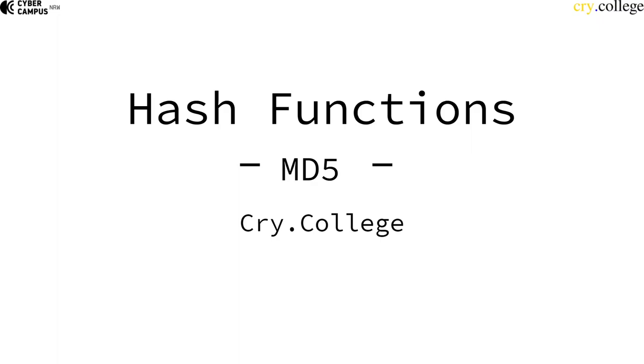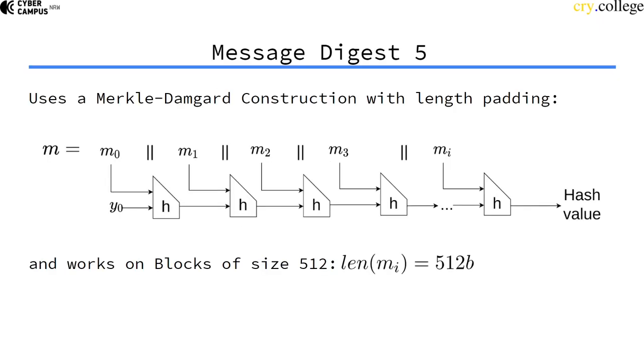Now let's look at an actual hash function and how it works internally. We're going to look at the hash function MD5. MD5 is a Merkle-Damgård construction with length padding and it works on input blocks of size 512 bits.